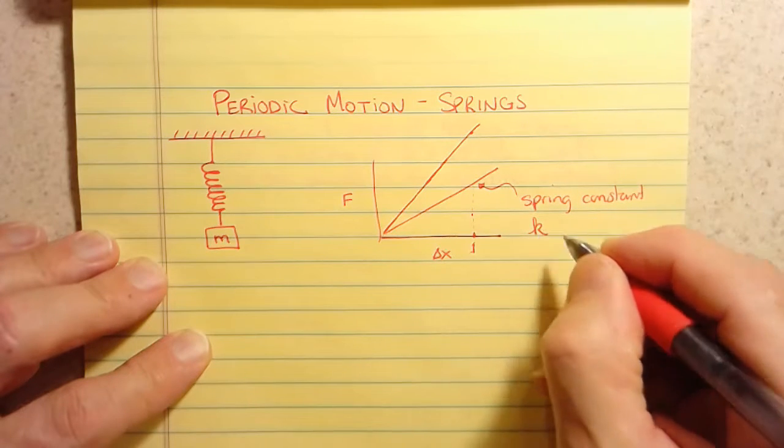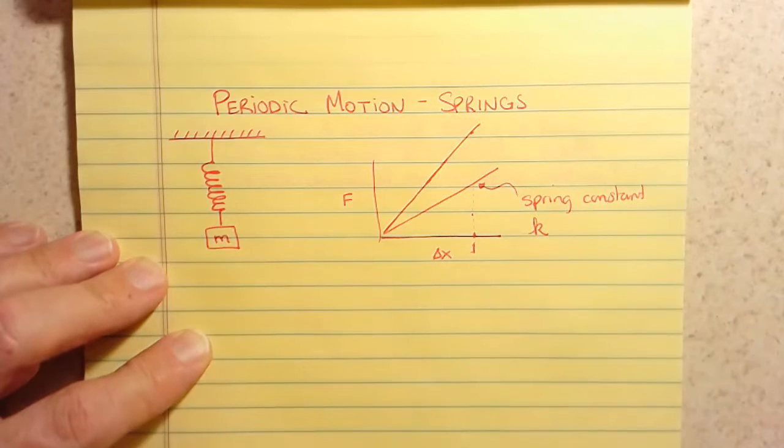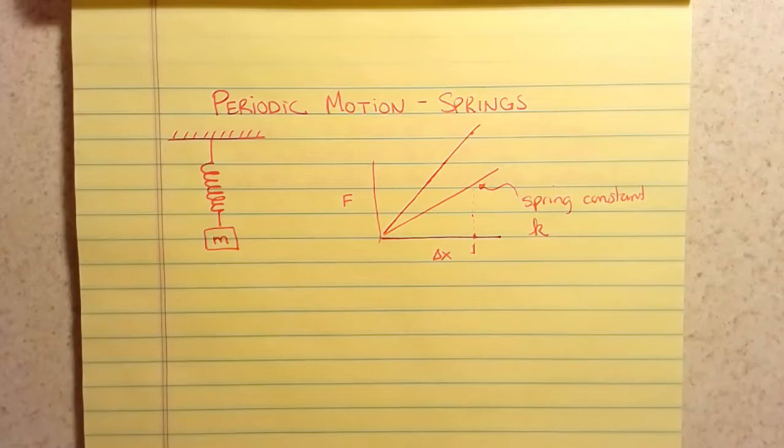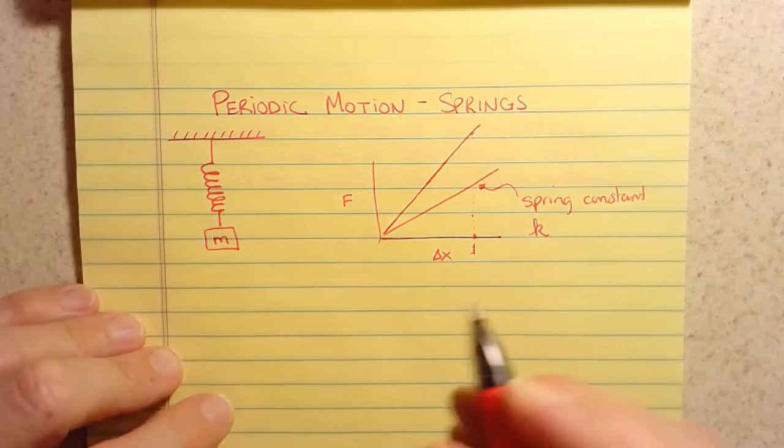And we're going to denote that with k. So k is basically a measure of how strong the spring is. If you have a very strong spring, it has a big number. And if you have a weak spring, it's a small number.